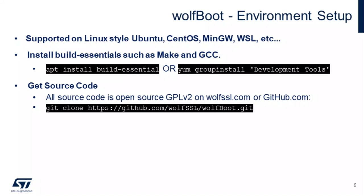With WolfBoot, there are a couple of things you need to get set up to build correctly. Building is generally done from a Linux-style environment where you have make and GCC. Here are a couple of ways you can install the essential items needed. All the source code for WolfBoot — it's a secure bootloader — is out there on GitHub under GPLv2. I'm going to walk you through the steps to use it on the STM32 U5.